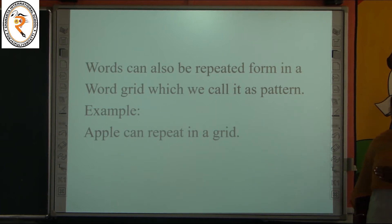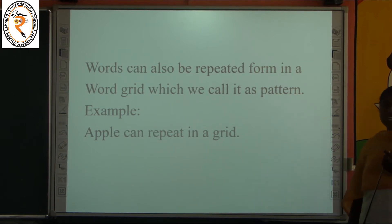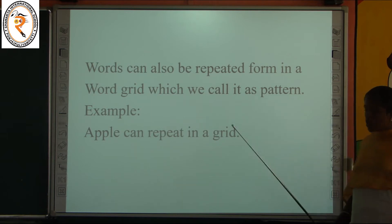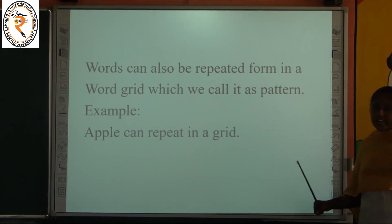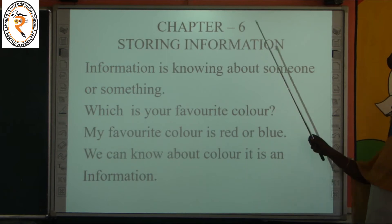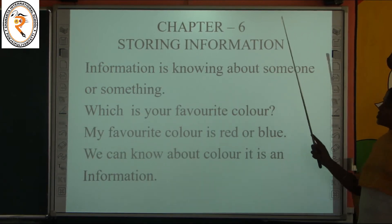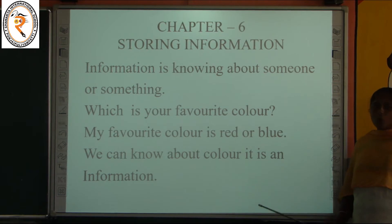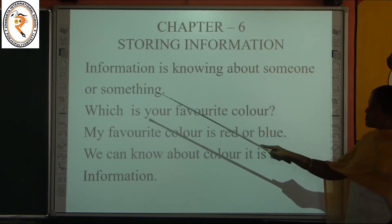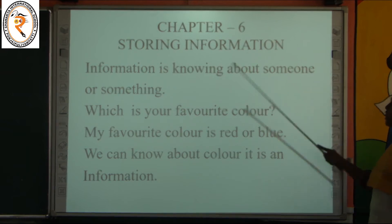Words can also be repeated in a word grid, which we call a pattern. For example, another word like 'art' can also be found in the same box. It is like a pattern because it is repeated two times in the word grid. Repeating means it comes once again. A word grid is a box with a number of letters where we have to find words. If any word gets repeated, it is a pattern. Anything that gets repeated is called a pattern.